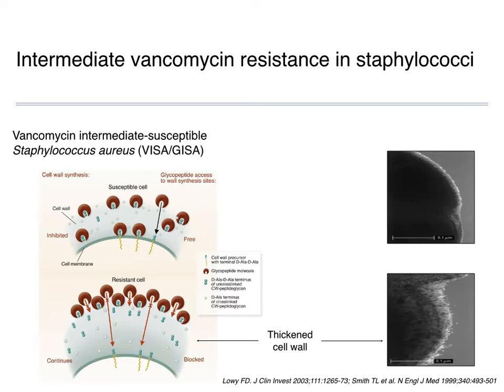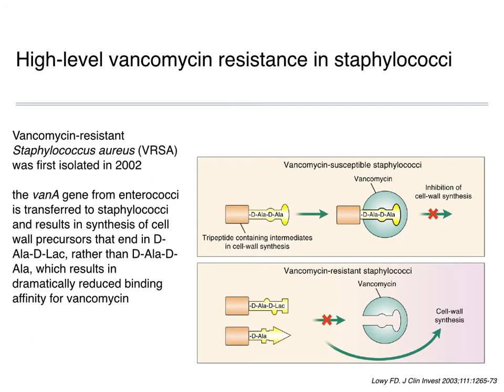There's sort of an urban legend that the VISA credit card company got upset when this resistant pathogen was called VISA and objected to the name. GISA stands for glycopeptide intermediate Staph aureus. Then finally in 2002 we had what we always feared — enterococci transferred that target site modification-based resistance to staphylococci, and we had the first reports of full-blown resistant Staph aureus with resistance to vancomycin.